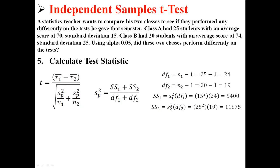Now the sum of squares is the variance of each times their respective degrees of freedom. Now remember, variance is just standard deviation squared. So for SS1, we know that the standard deviation of class A is 15. So if I square that, I'd have the variance. And when I multiply the variance by the degrees of freedom for that, I get a sum of squares of 5400. And the same thing for the second one. For sum of squares 2, I find a sum of squares of 11,875.